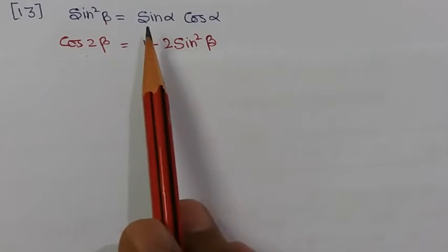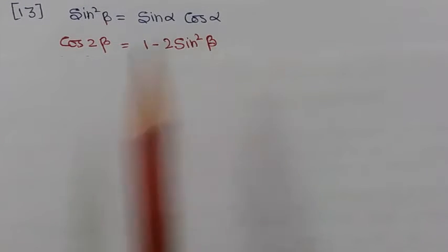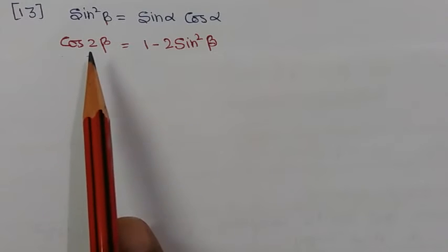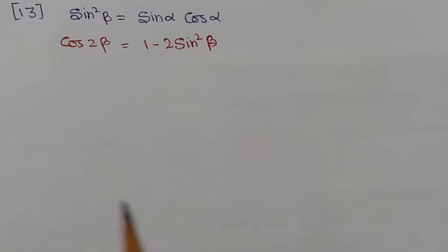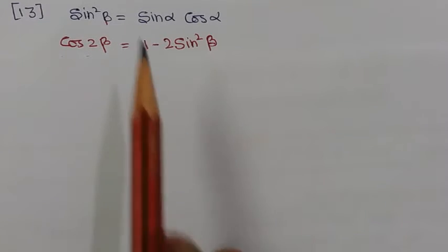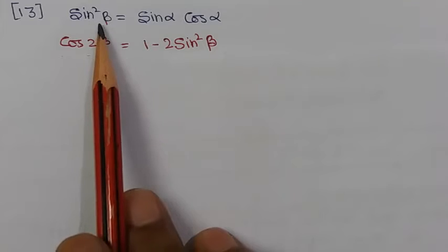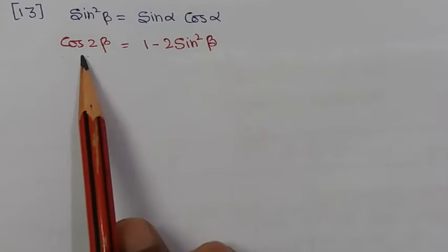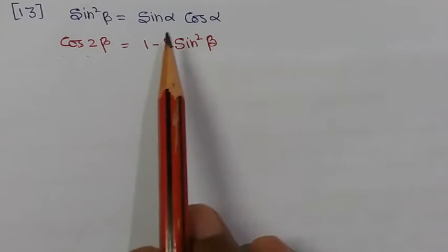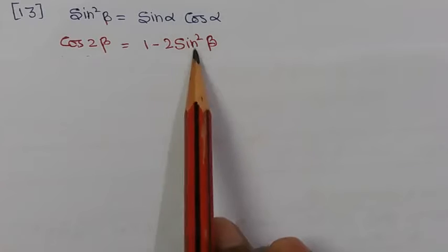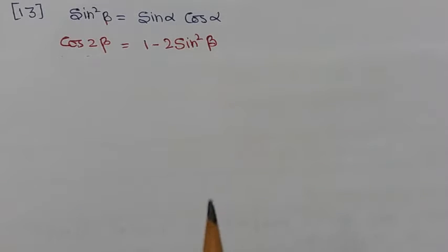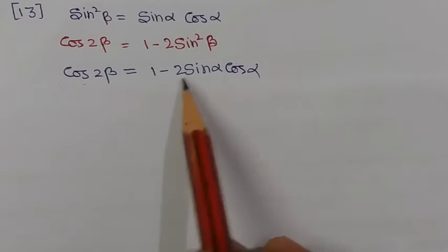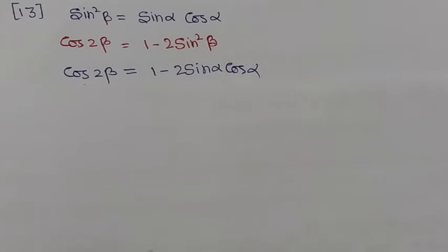Given sin²β equals sin α cos α. We know cos 2β equals 1 minus 2 sin²β. Substituting the value of sin²β, we can write cos 2β equals 1 minus 2 sin α cos α.